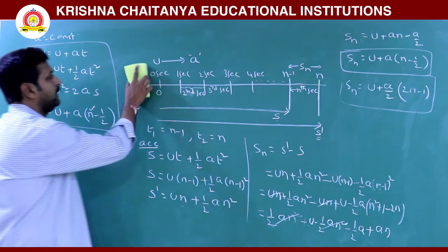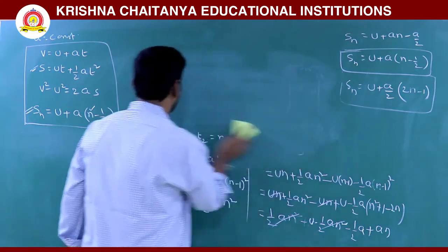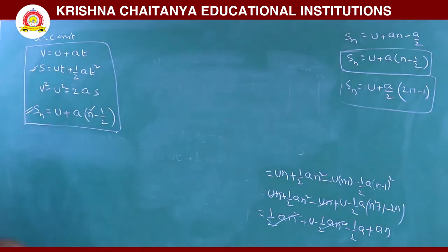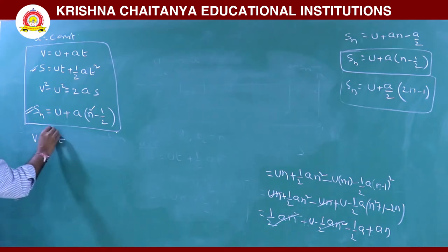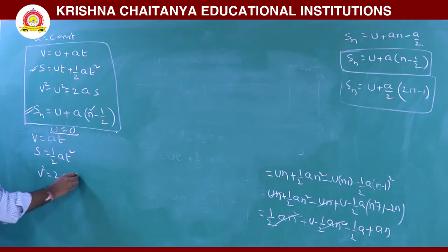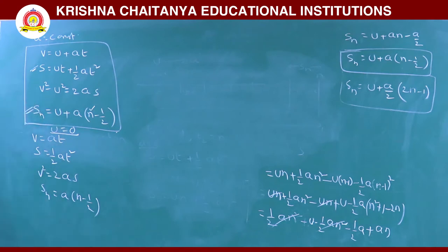If the body starts with zero initial velocity (u = 0), the expressions become: V = at, S = ½at², V² = 2as, and Sn = a(n - ½). These are the simplified equations when initial velocity is zero.